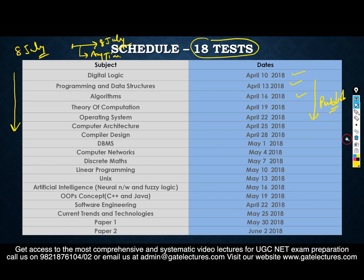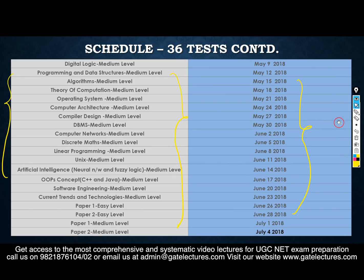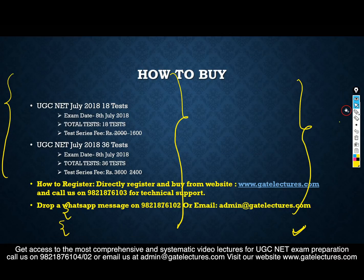The second schedule is for the 36-test package, divided into two parts. Initially all the easy level tests are listed, followed by all the medium level tests. The test series finishes on 4th July, covering Paper 1 and Paper 2 at both easy and medium levels.